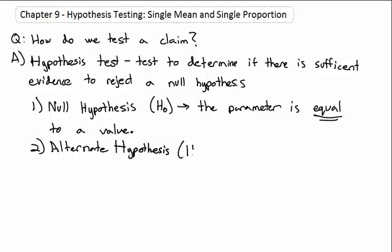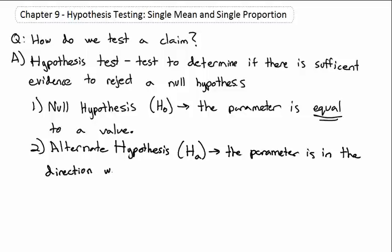The alternate hypothesis is abbreviated H sub A. This is the parameter in the direction we are trying to prove. It's a very similar idea to our justice system: you are innocent until proven guilty. The null hypothesis is that you are innocent; the alternate is what we are trying to prove — we have to prove beyond a reasonable doubt that you are guilty.